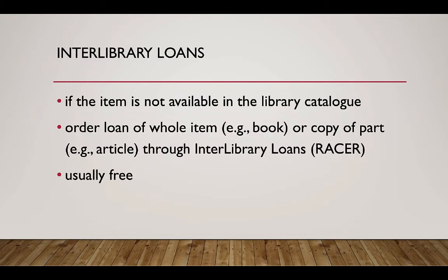If the item isn't available online or through the library catalog, you can order the whole item — for example, a book — or a copy of a part of the item — for example, a journal article — through interlibrary loans, also known as RACER. This service is usually free.